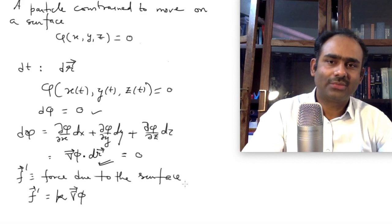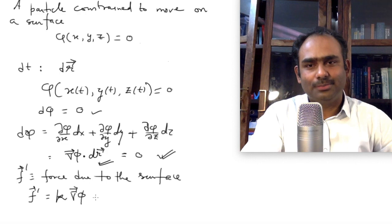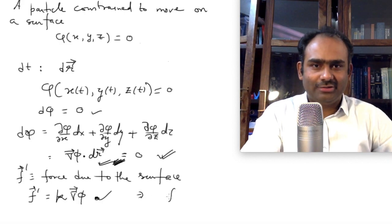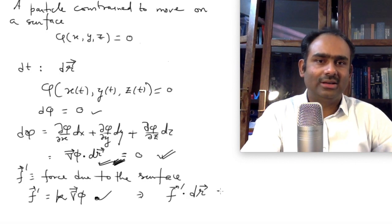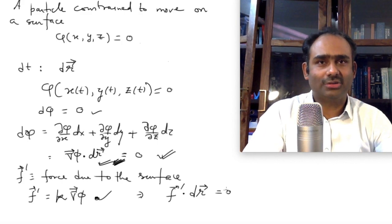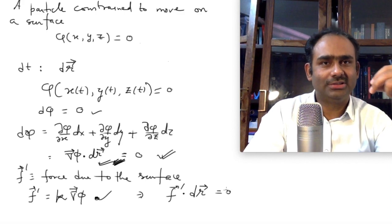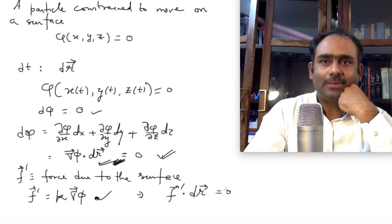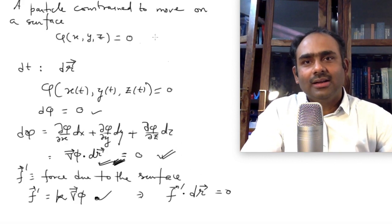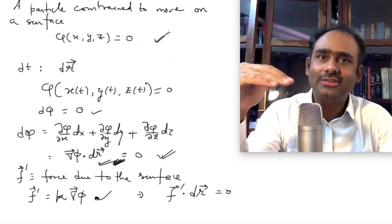From here we can immediately see something about the nature of the force of constraint. Putting F-prime proportional to gradient of phi into the relation gradient-phi dot dr = 0, we immediately see that F-prime dot dr equals 0. That is the work done by the force of constraint in moving the particle by dr, and it turns out to be 0. Note however that phi here did not involve time explicitly — I am imagining a surface that does not change over time.